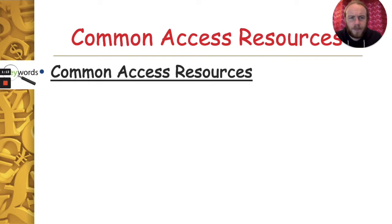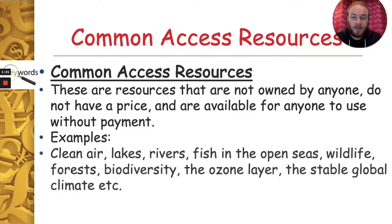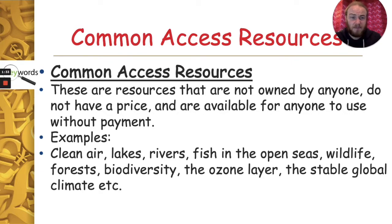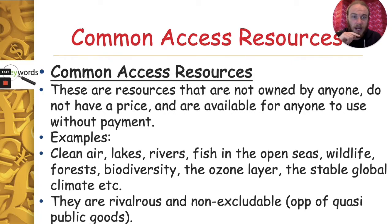Common access resources are resources that are not owned by anyone, they don't have a price, and are available for anyone to use without payment. Examples include clean air, lakes, rivers, fish in the open seas, wildlife, forests, biodiversity, the ozone layer, and the stable global climate. They are what we call rivalrous and non-excludable — the opposite of quasi-public goods.